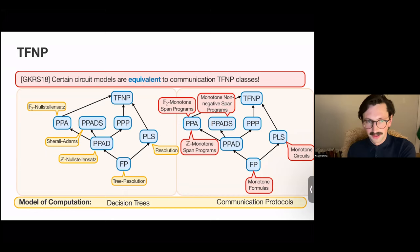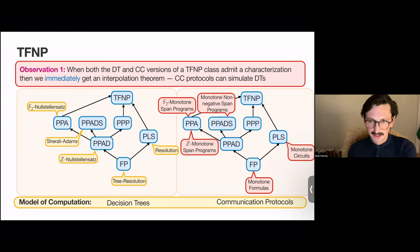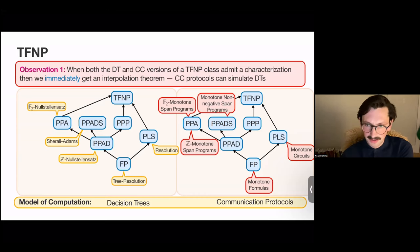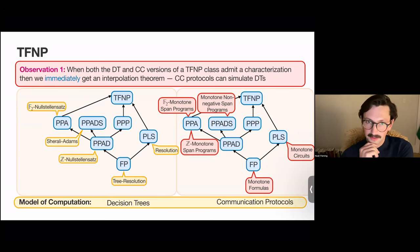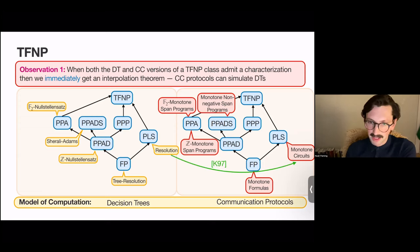The real upshot comes from the following observation. When we have both a decision tree characterization and a communication characterization of the same TFNP class — for example, PLS in the decision tree world is equivalent to Resolution, and PLS in the communication world is equivalent to monotone circuits — then we immediately, in a black-box way, get an interpolation theorem. This follows because communication protocols can simulate decision trees.